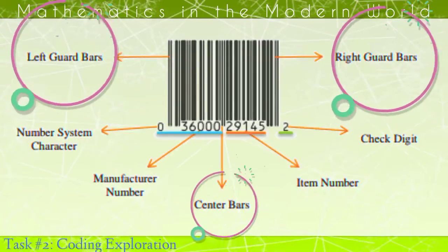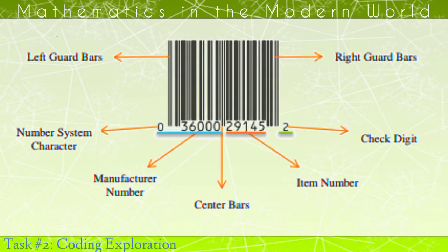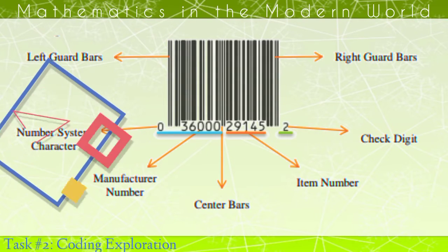The guard bars are the reference point for scanning devices. The number system character is the first of the 12 digits in UPC. It identifies the type of product.